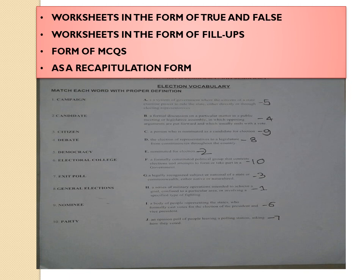Various activities can be represented in the form of a worksheet. Worksheets can be diagrammatic, true or false, fill-ups, MCQs, recapitulation, or a testing tool. To bring art into it, we can ask students to draw or do a pictorial representation. Here, an activity about election vocabulary includes symbols of different political parties which students can paste or draw and color. This type of activity where students bring color or an art form into their work leads to more thorough learning and leaves an imprint in the mind.